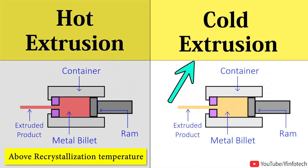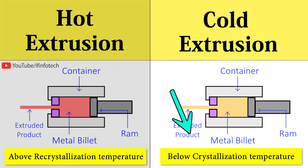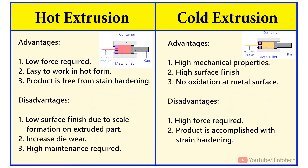In the case of cold extrusion process, the temperature is set to below crystallization temperature or room temperature, because the advantage of this is high strength of the extruded product due to cold working, and it gives closer tolerance and better surface finish.